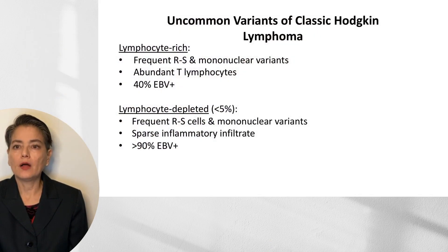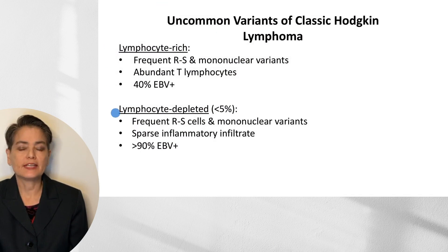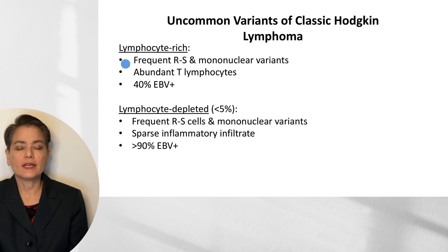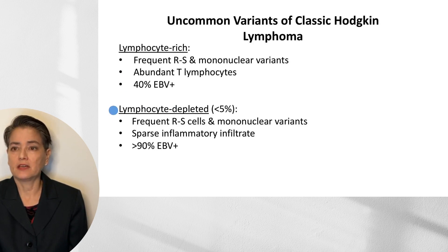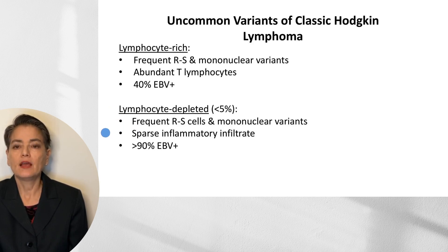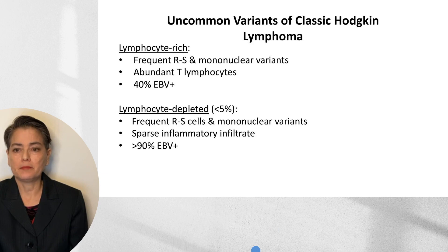The two remaining variants of classic Hodgkin lymphoma — lymphocyte-rich and lymphocyte-depleted — are quite uncommon. In lymphocyte-rich, we see Reed-Sternberg cells and mononuclear variants with sheets of abundant T-lymphocytes; about 40% are associated with Epstein-Barr virus. In lymphocyte-depleted, which is less than 5% of Hodgkin lymphoma cases, we again see frequent Reed-Sternberg cells and mononuclear variants in a sparse inflammatory infiltrate; more than 90% of these are positive for Epstein-Barr virus.